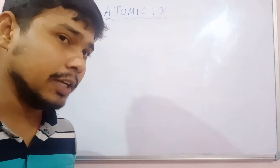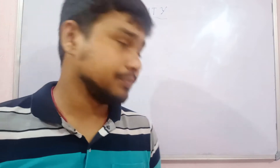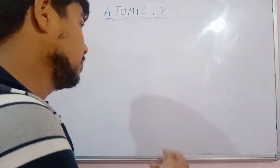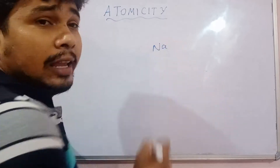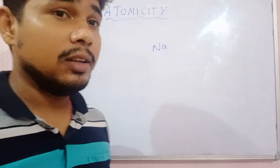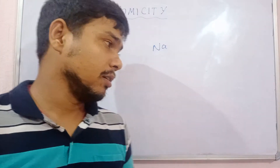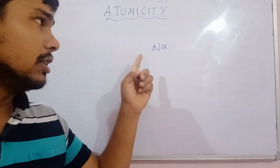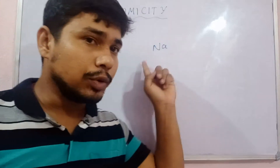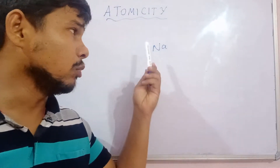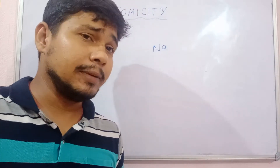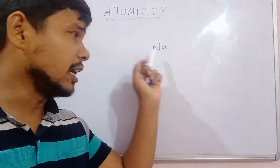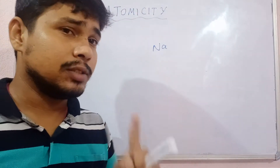Let me explain with an example. Suppose I have written here Na — sodium. Here only sodium is written, that means only one atom is present here. That means its atomicity is 1.